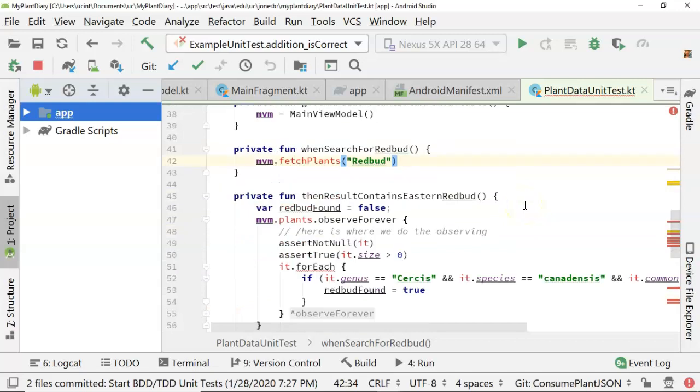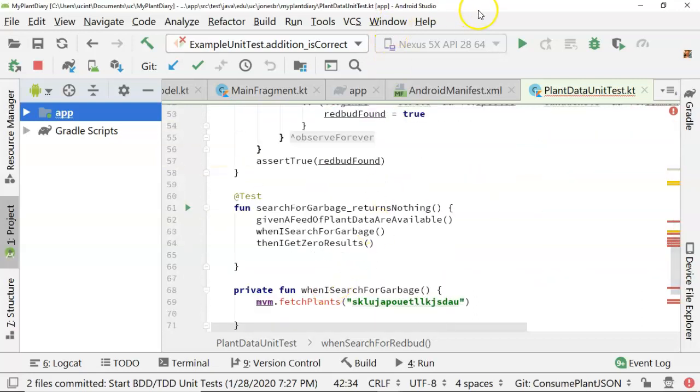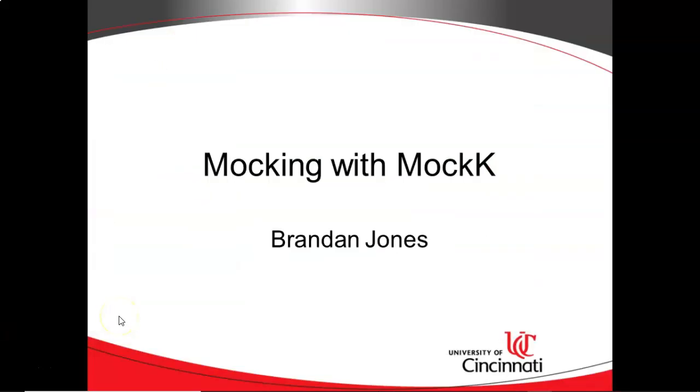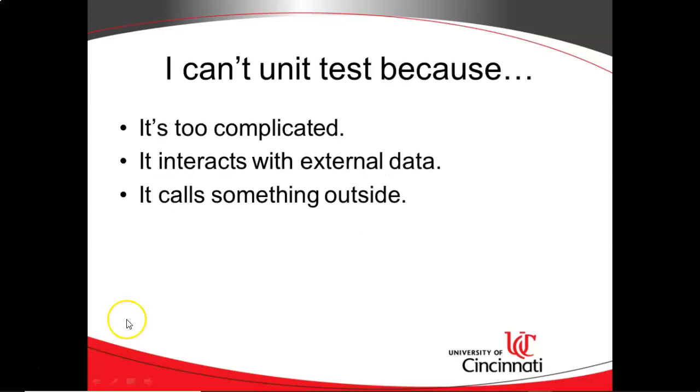You see that we're doing test-driven design, so we're writing the test before we've written the code. And so there are several unresolved references because we have not written the code yet. Mocking will help us finish off these unit tests because they allow us to mock dependencies that are too complex for our development cycle right now. And it lets us focus on only what we want to test.